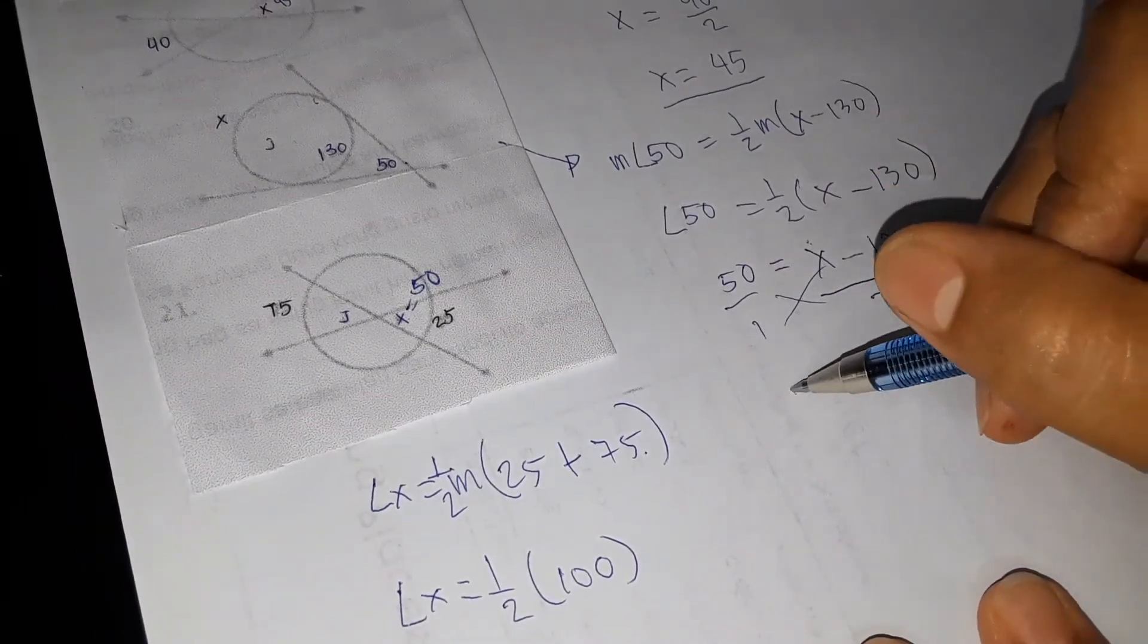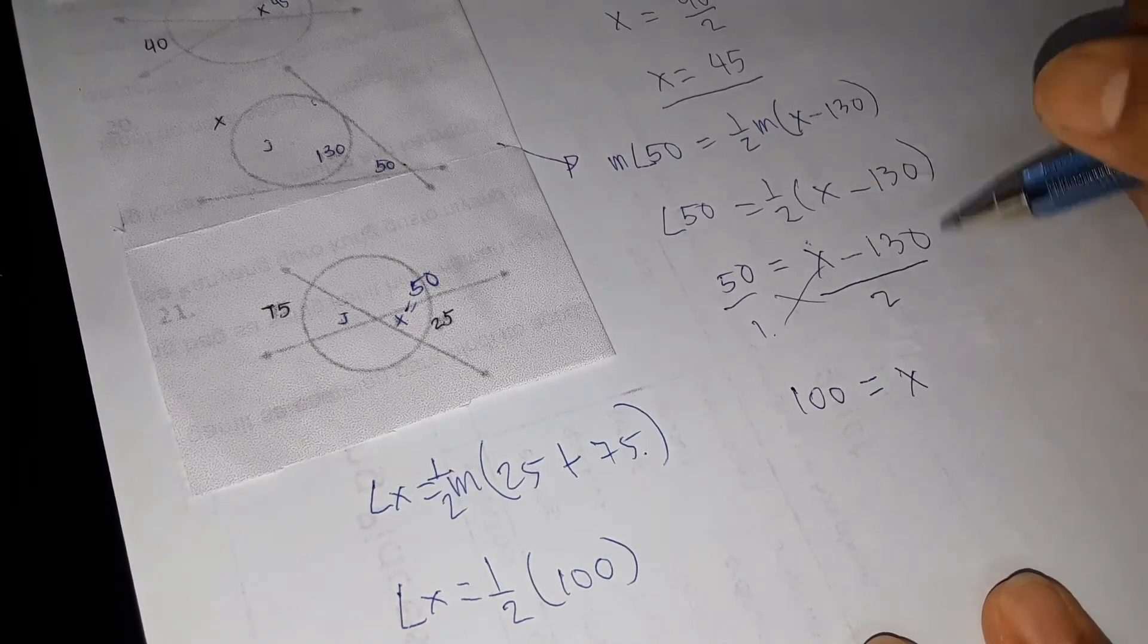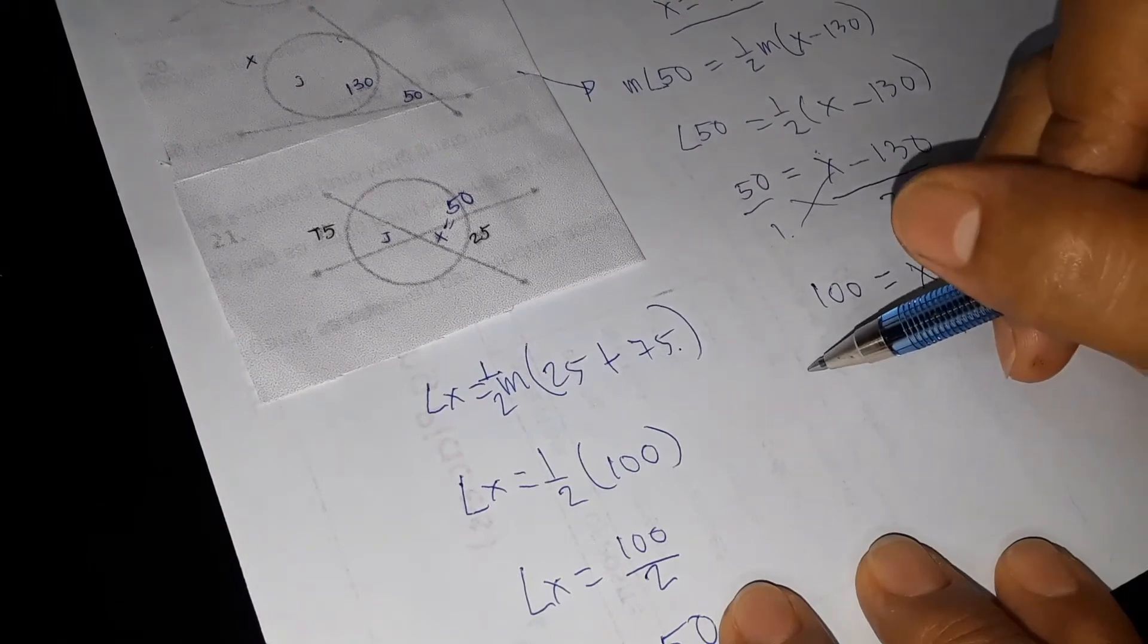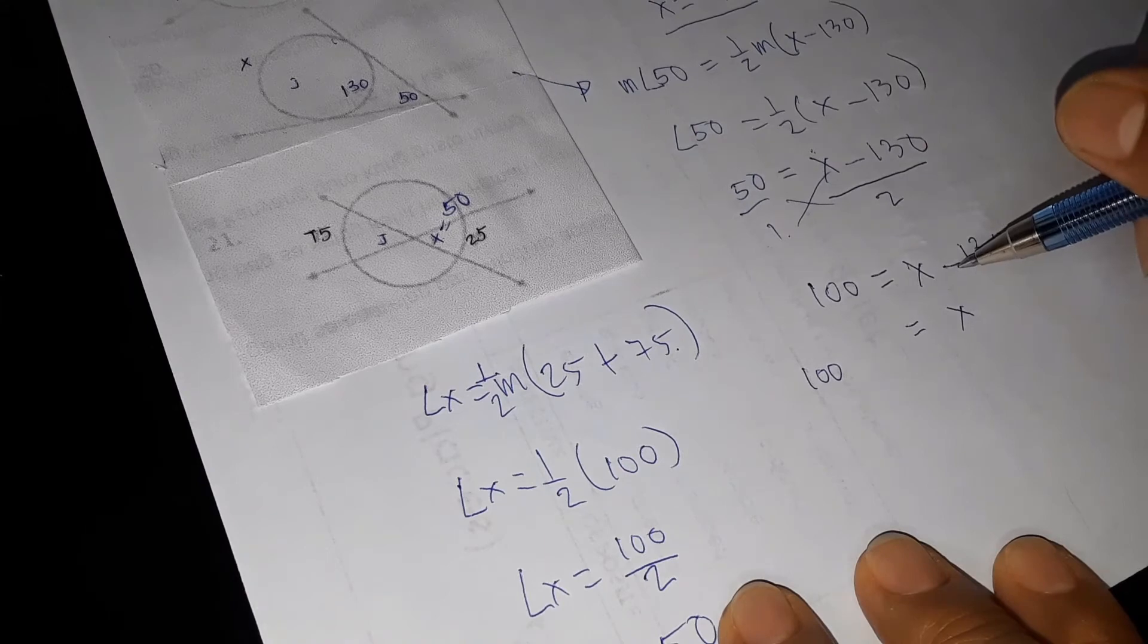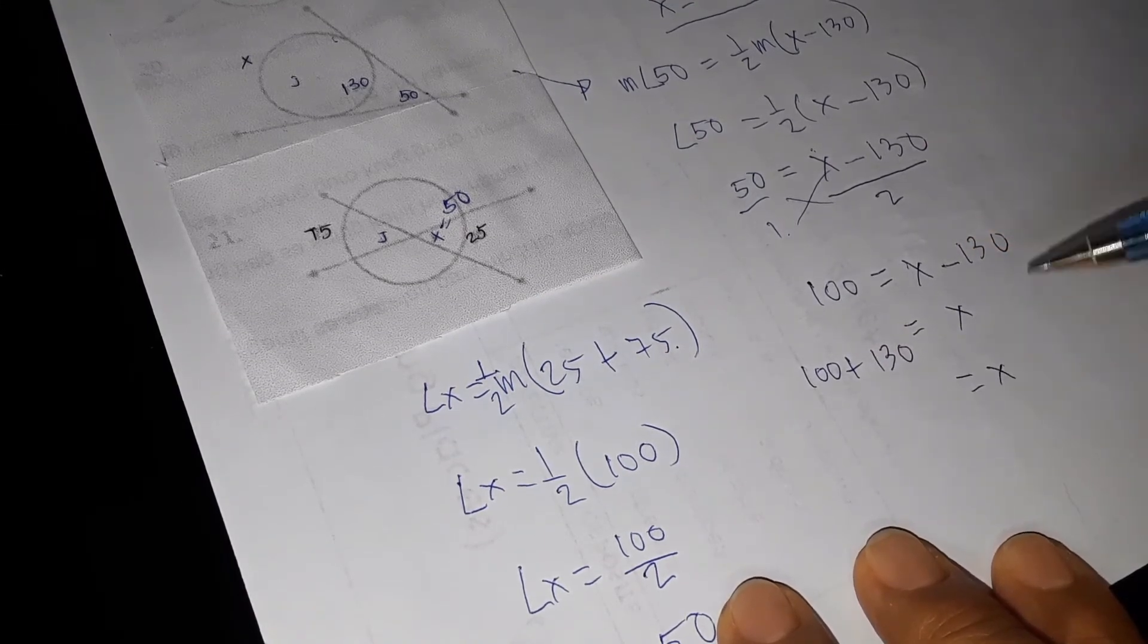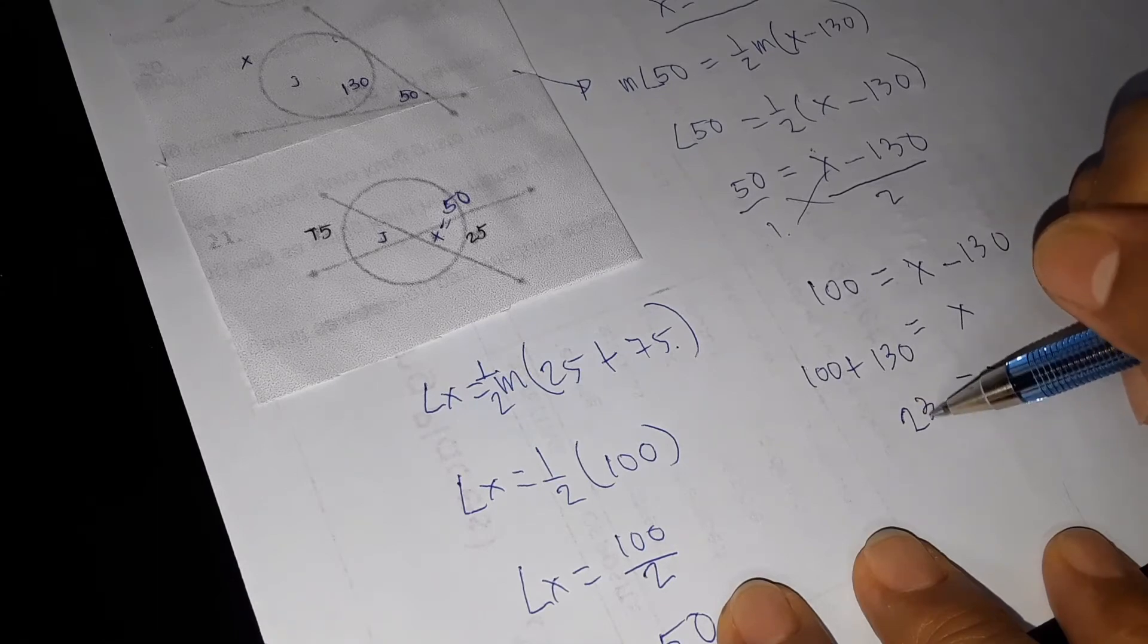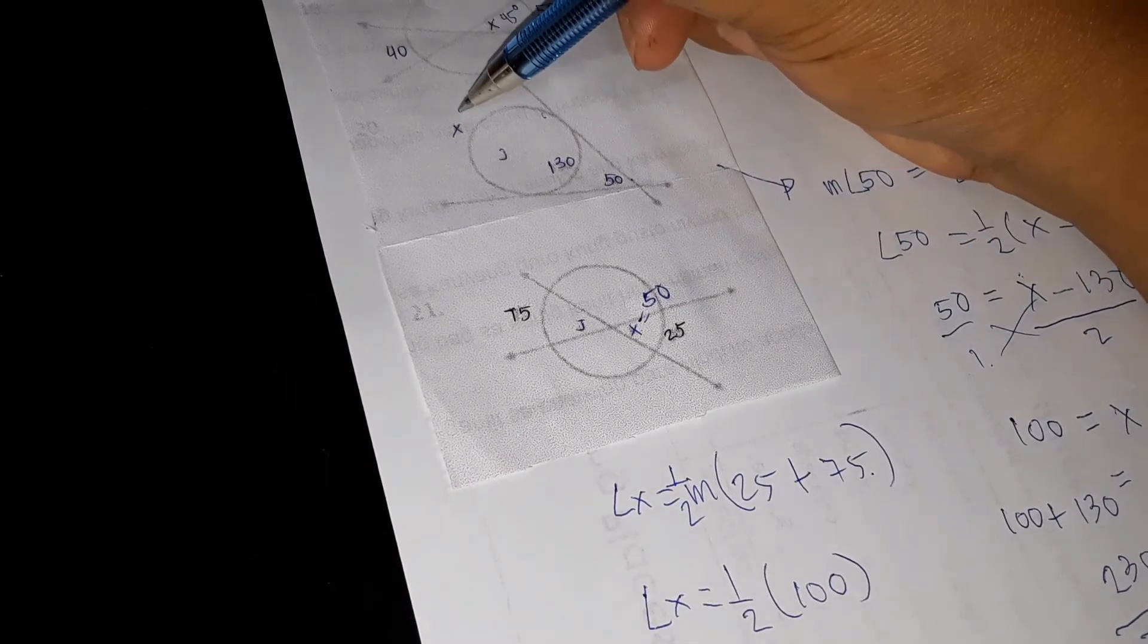So 50 times 2, we have 100 is equal to 1 times X, X. 1 times 130 is still 130. Then, X is equal to, so this is 100. Let's move 130 to the other side. So negative becomes positive. Then we have 130. So X now is equal to 100 plus 130 is equal to 230. Therefore, this is 230.